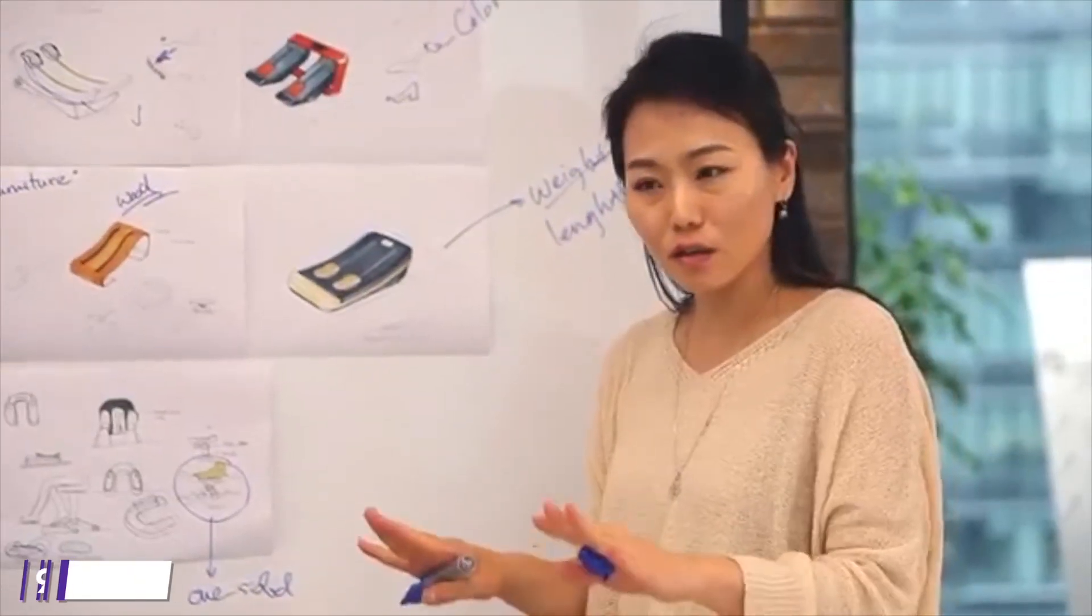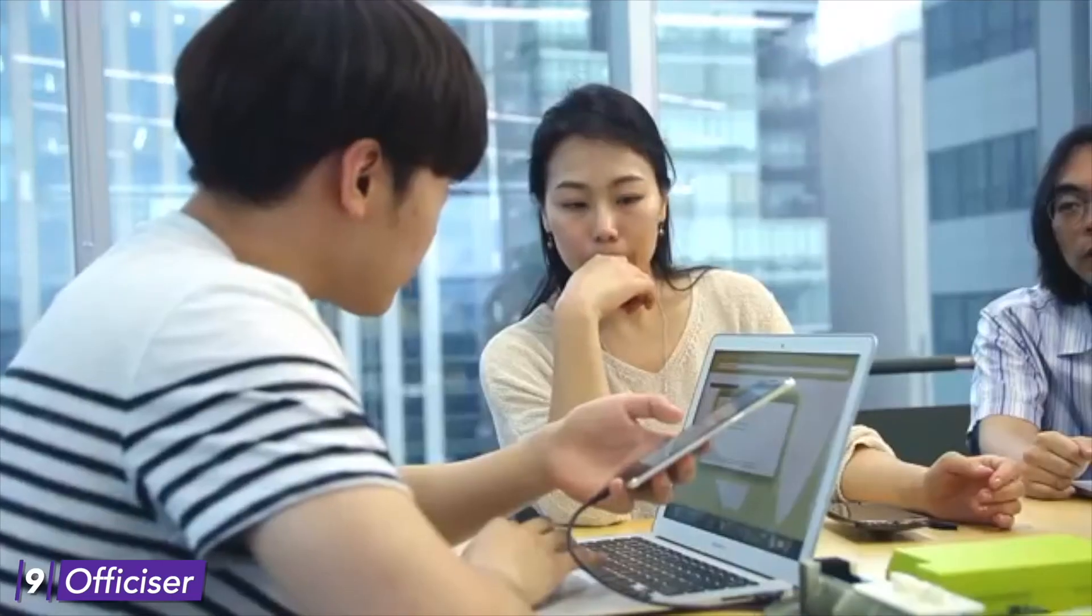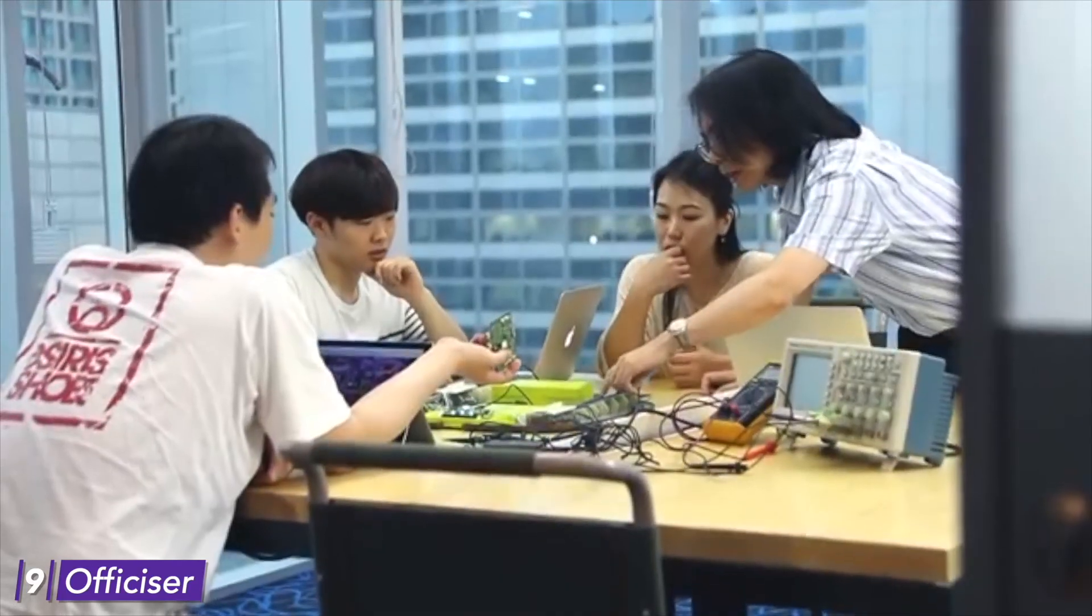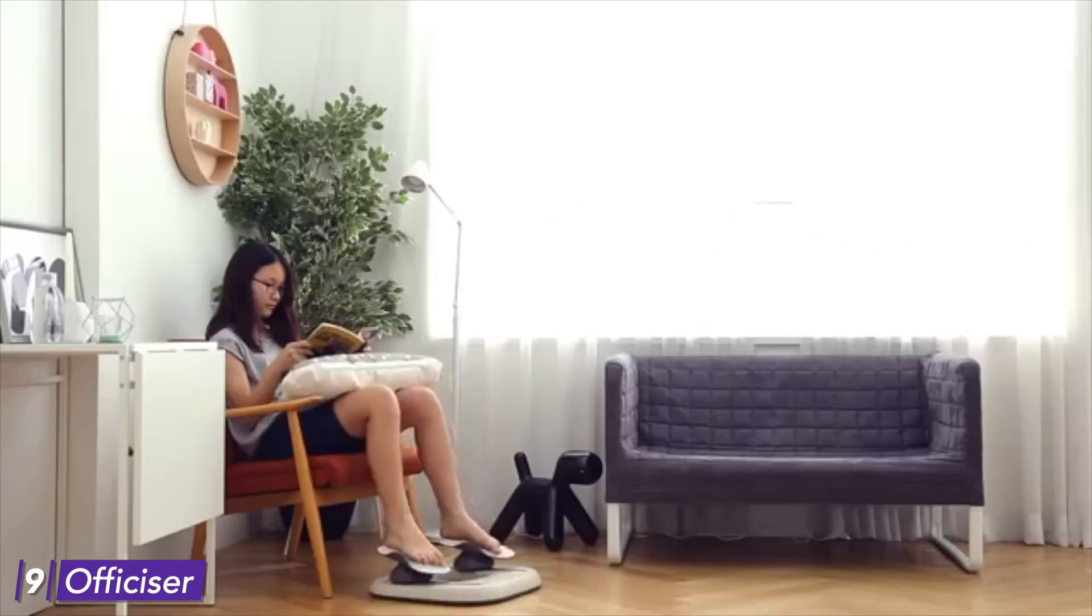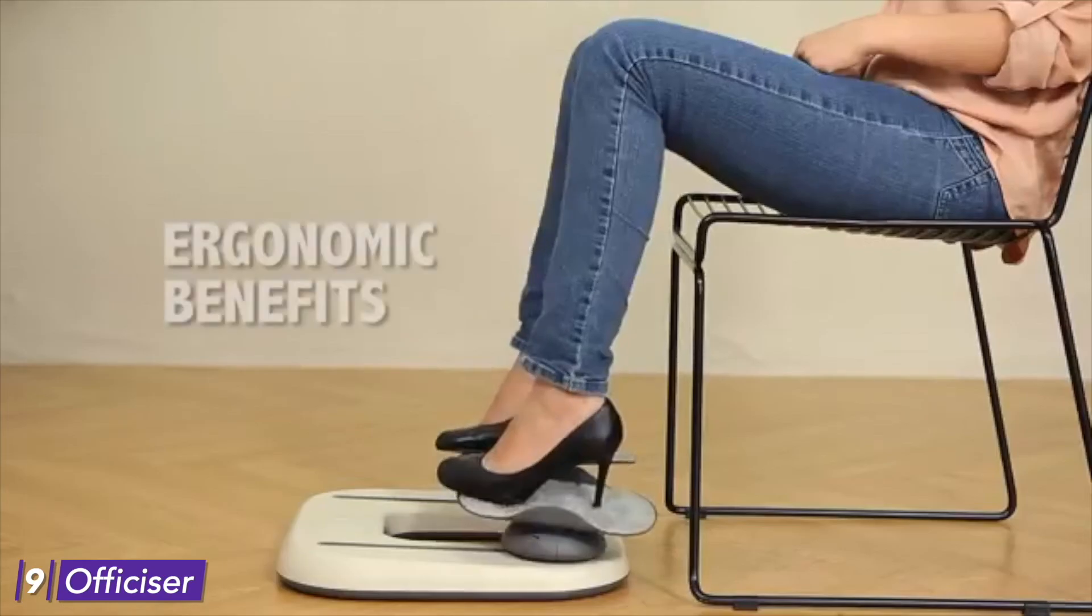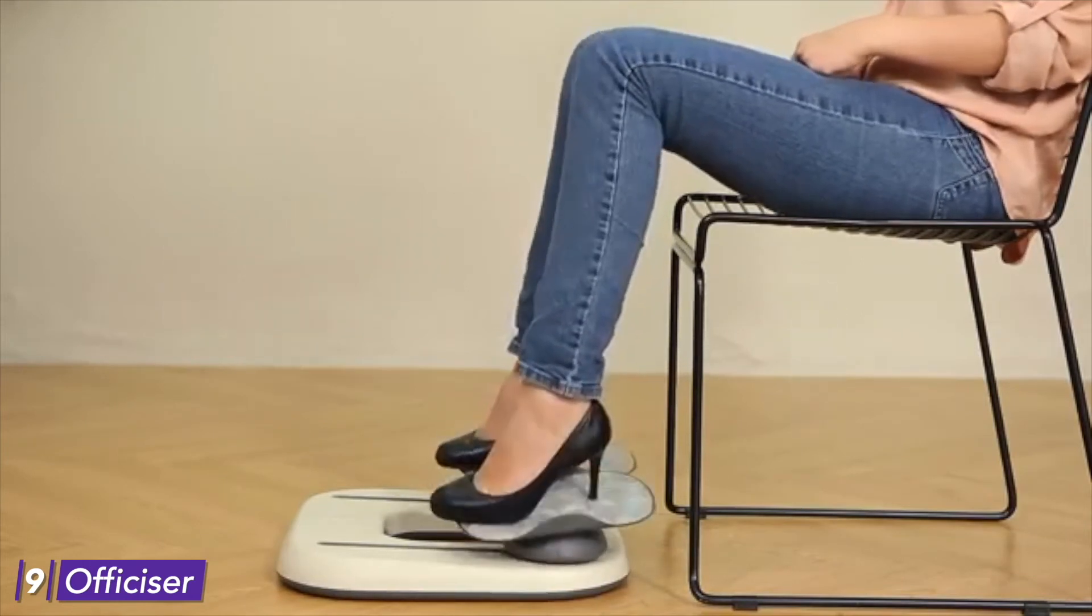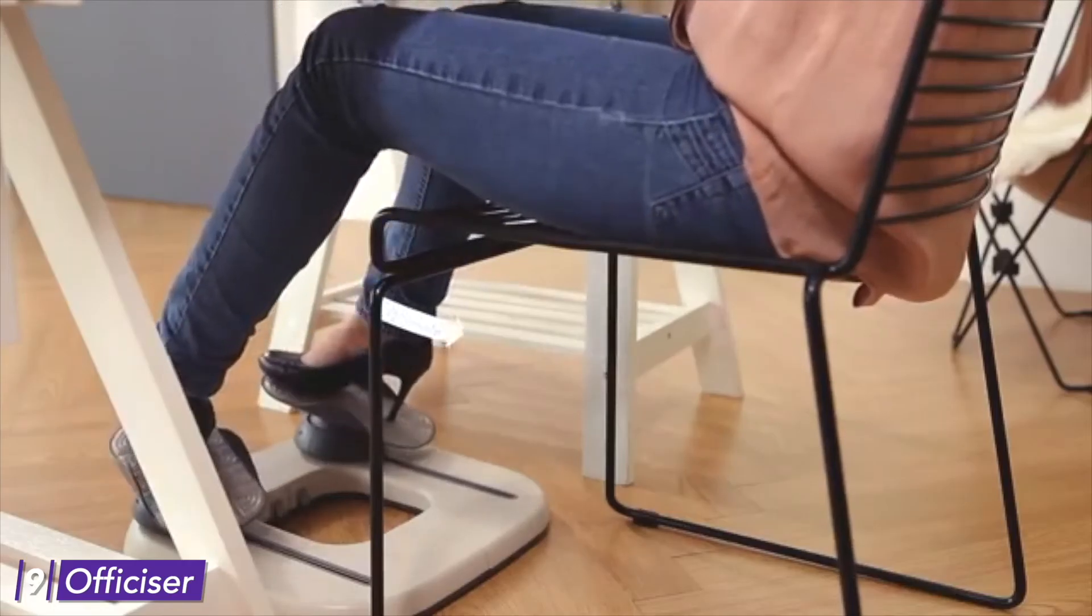Number 9. Officeizer. A way to walk while sitting in one place seems fictional, but it is possible with Officeizer. An active footrest with multi-angle pivoting plus gliding. You can walk, jog, ski, bike, snowboard, surf, water ski, and skateboard to keep you in shape while sitting for long hours at work.